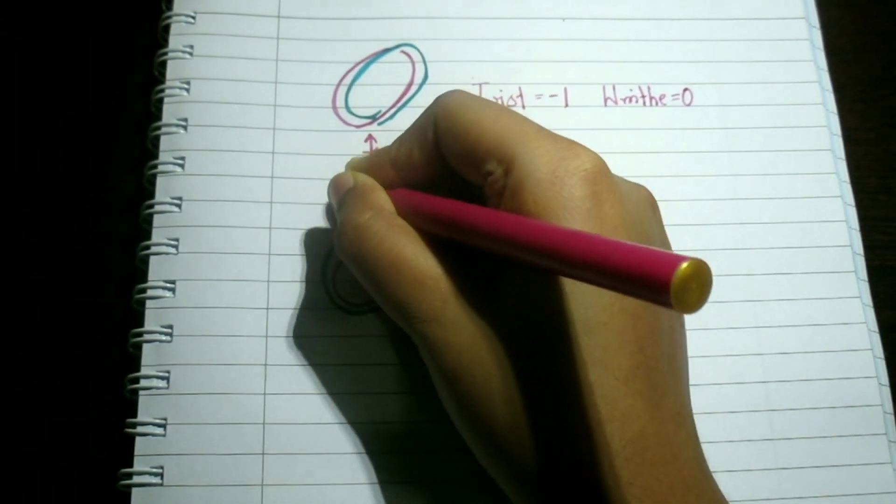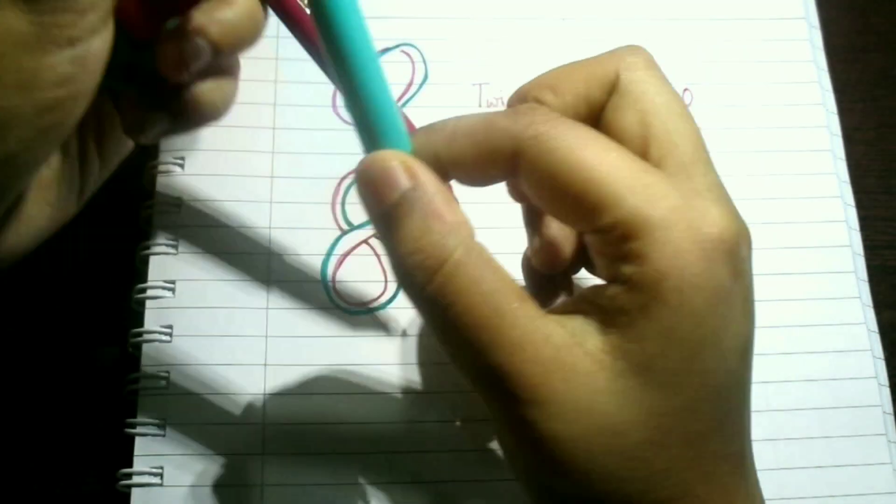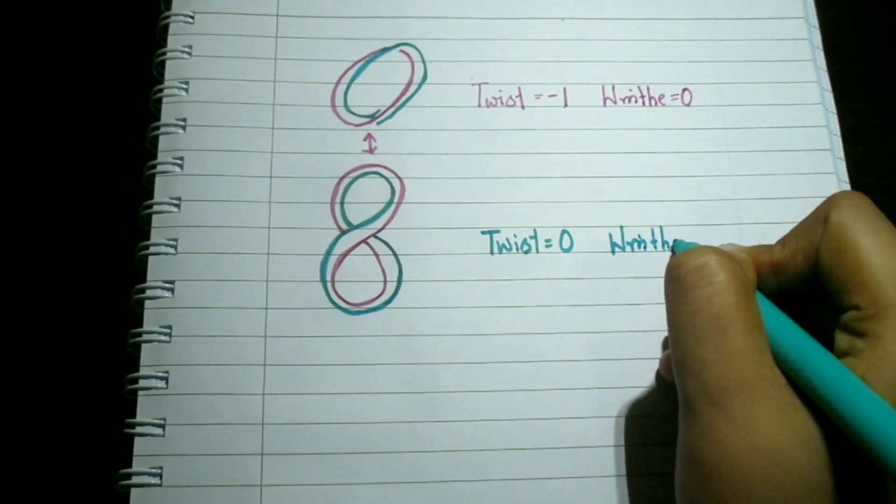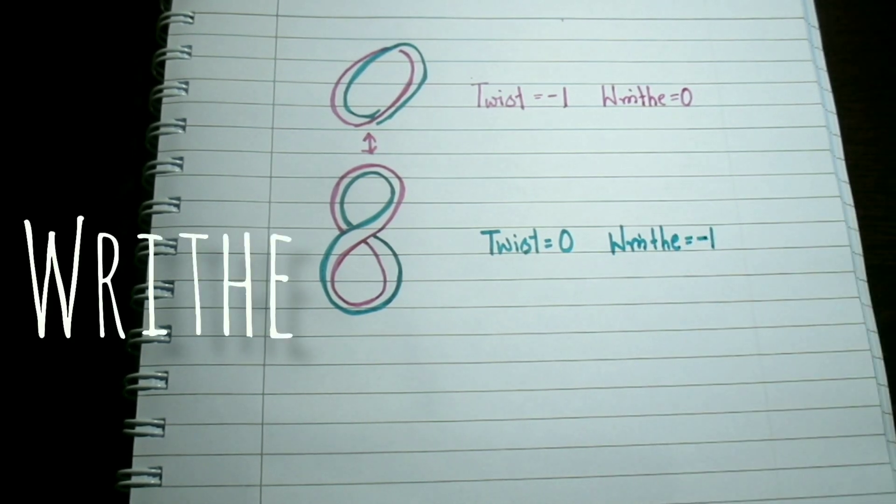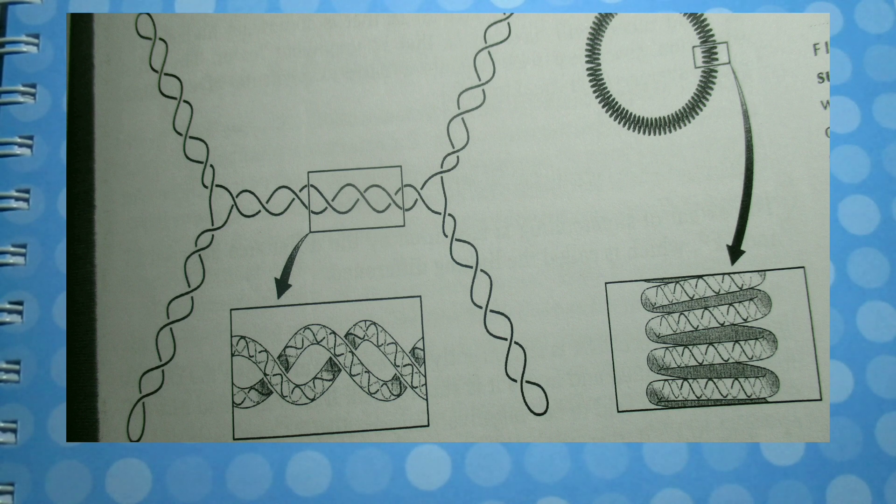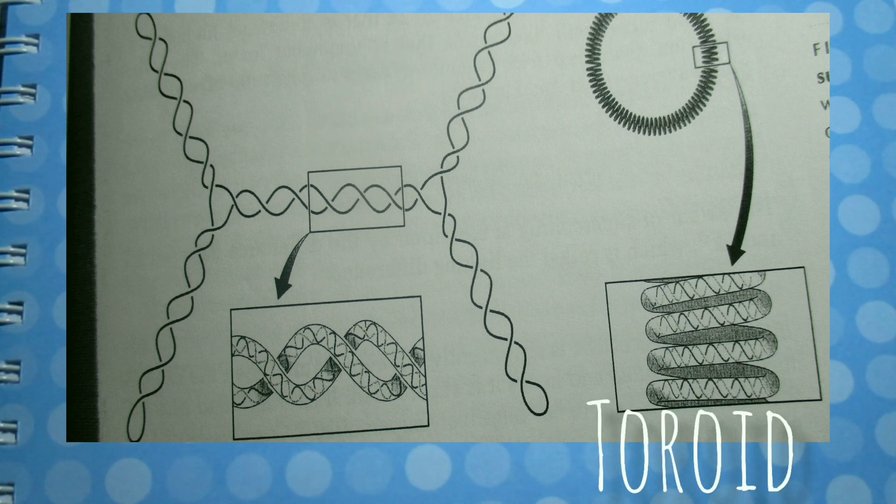But covalently closed circular DNA is generally not lying flat on a plane. Rather, it is usually torsionally traced such that the long axis of the double helix crosses over itself, often repeatedly in three-dimensional space. This is called writhe. Writhe can take two forms: one form is the interwound or plectonemic writhe, in which the long axis is twisted around itself.